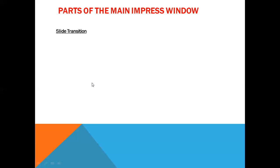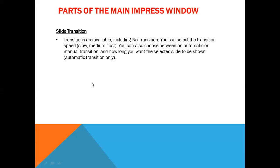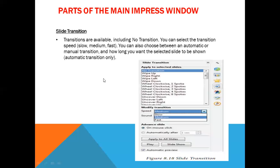Next is Slide Transition. Suppose we have a transition — if we apply an animation, it can be set to slow or medium speed. We can move slides faster from right to left, or at medium speed. We can control the speed of the slide transition.